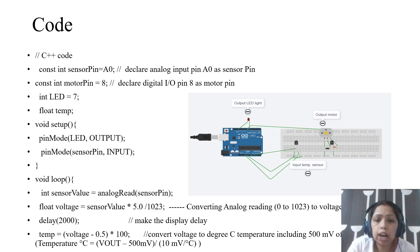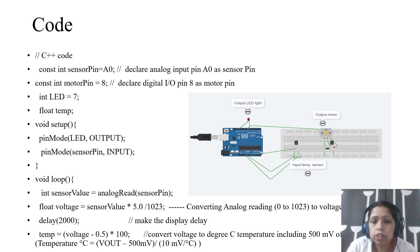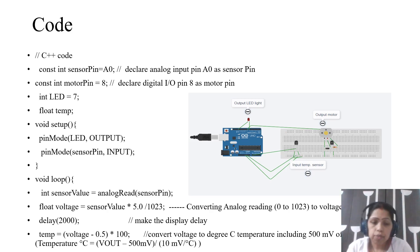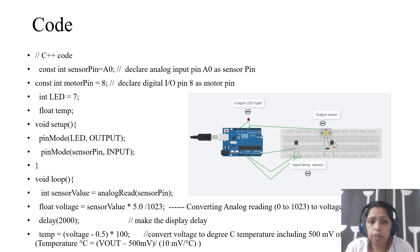In the setup function, I have to declare the mode of the output port. The LED and the motor will be output pins, but the sensor will be the input pin because I am collecting data from the sensor. Pin mode: motor pin, output — like this we have to type.